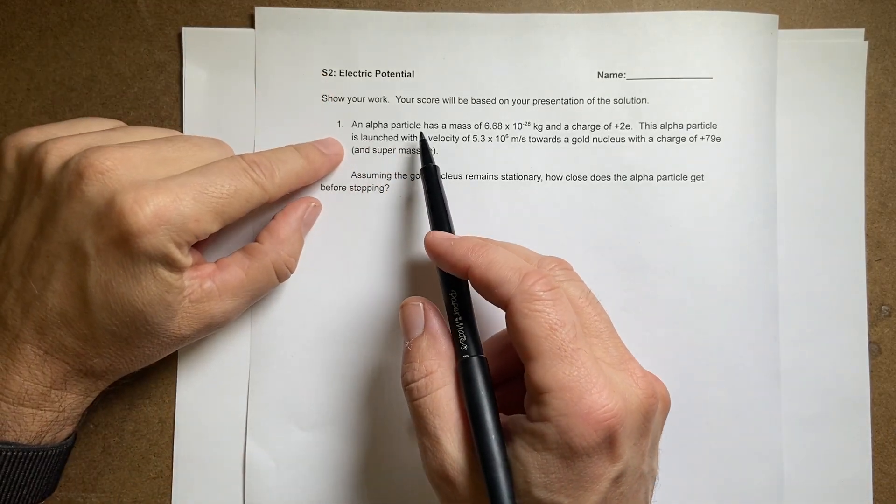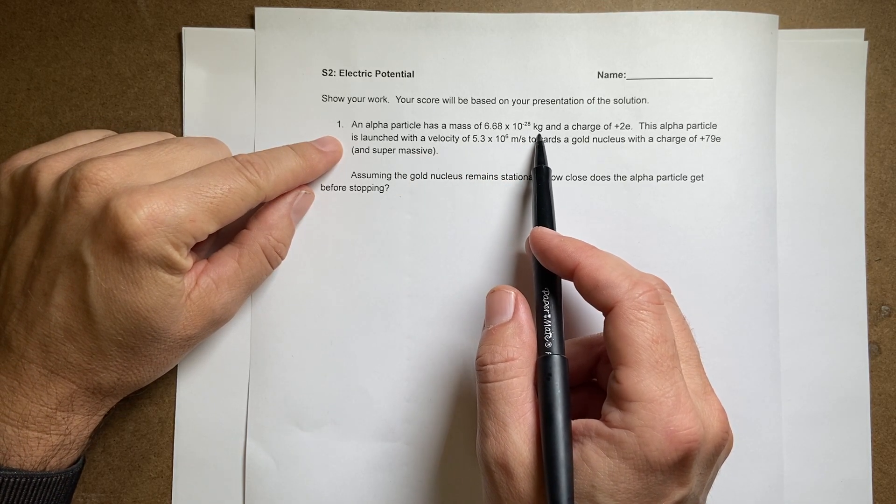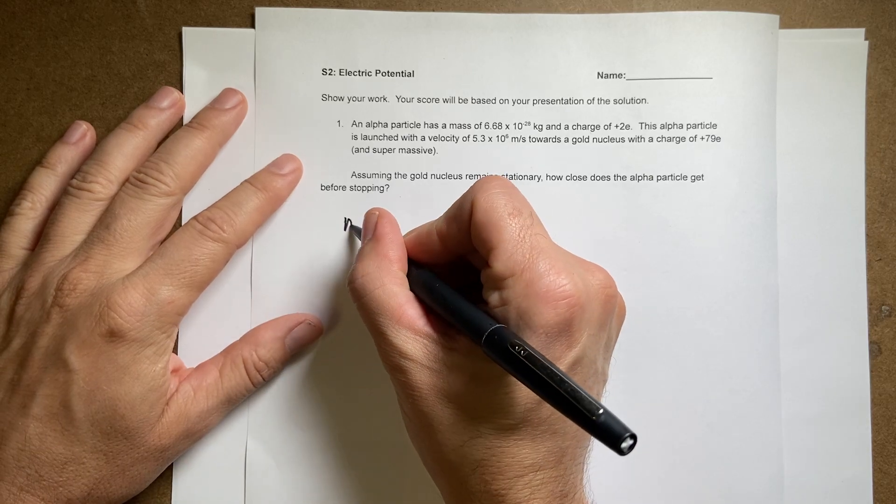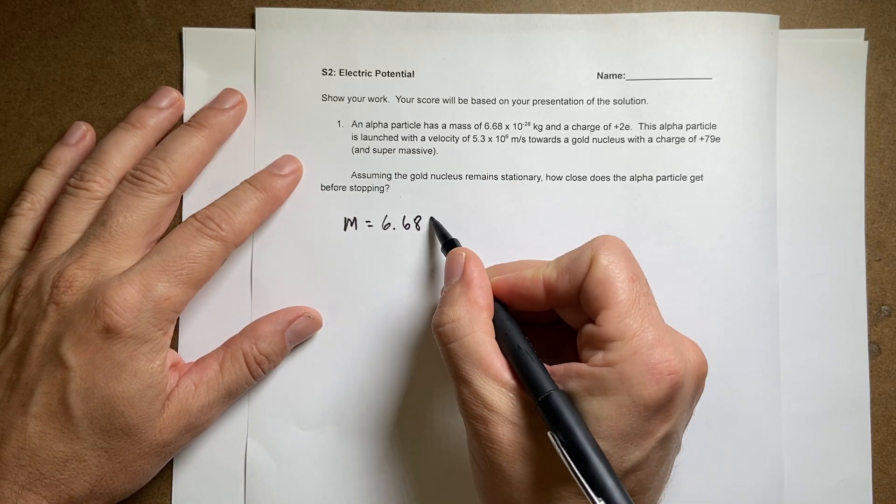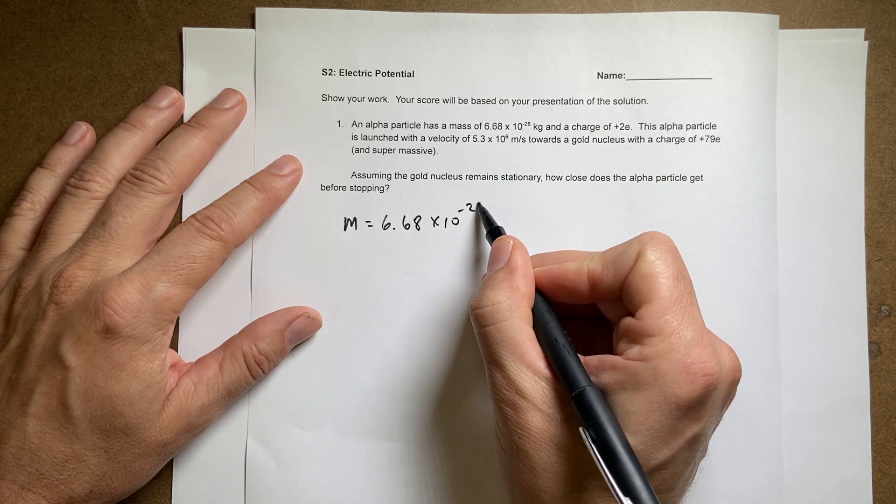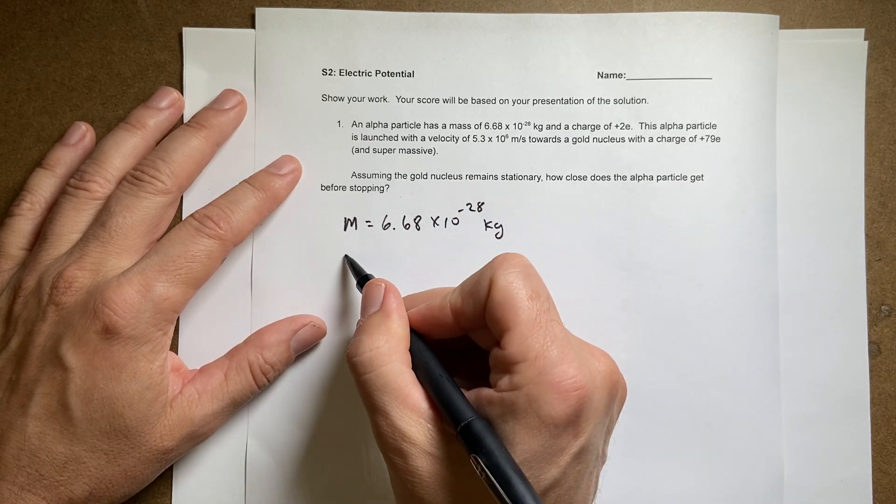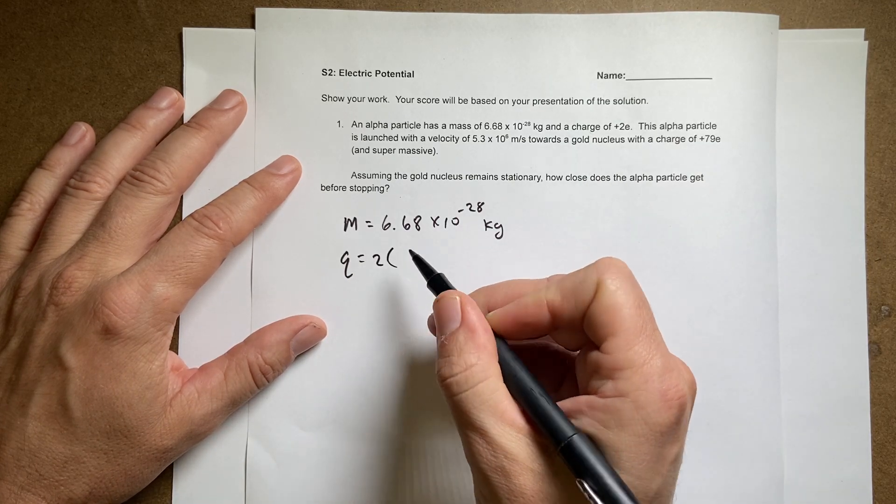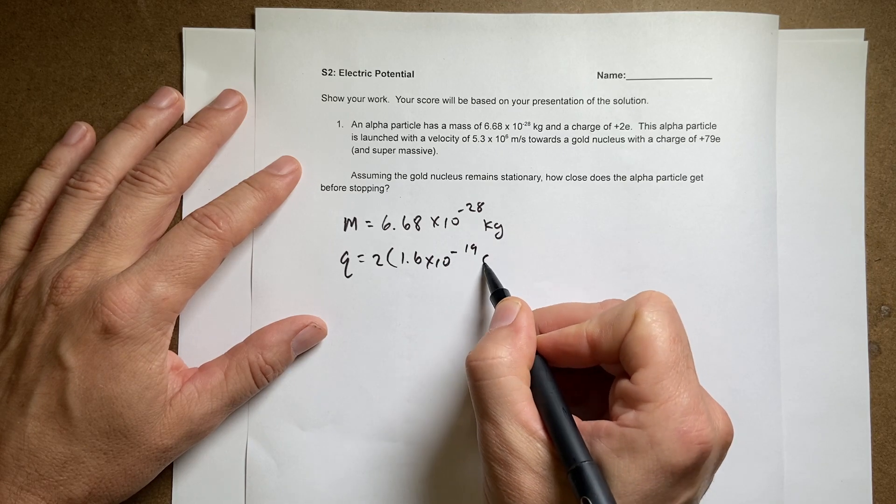Here is a test question. An alpha particle has a mass of 6.68 times 10 to the negative 28 kilograms. So let's put that as m equals 6.68 times 10 to the negative 28 kilograms and a charge of plus 2e. So q equals 2 and e is 1.6 times 10 to the negative 19th coulombs.